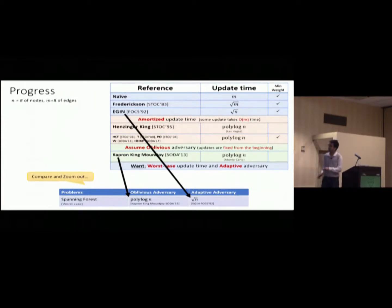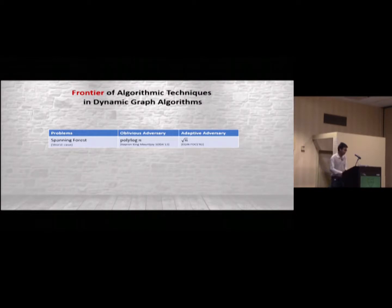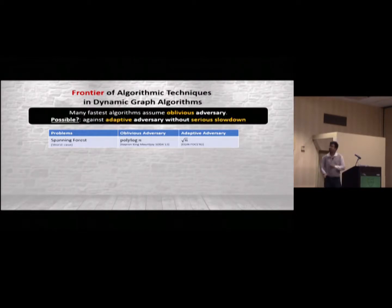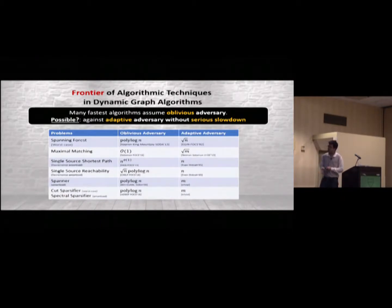So, just to compare here, if you allow oblivious adversary, then you have polylog back here. For adaptive adversary, you get just root n here. Okay. So, when you compare this, it actually brings us to a frontier. Frontier of algorithmic technique in dynamic graph algorithm. Because there are many fast algorithms in this field that assume oblivious adversary. The question is that, is it possible to remove this assumption without serious slowdown? This is a general thing that happened. There are many important problems in this field, and many cool algorithms assume this oblivious adversary. When, once you don't have this assumption, it becomes much slower.